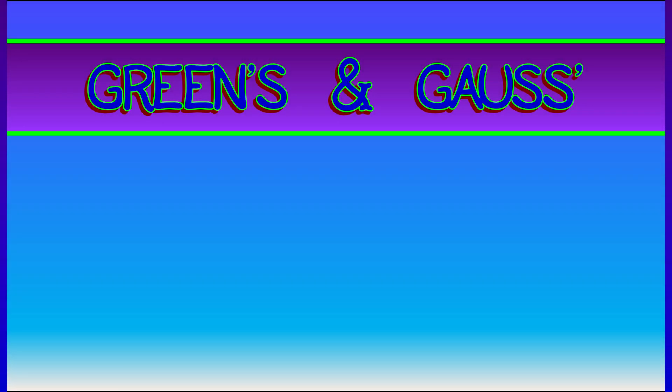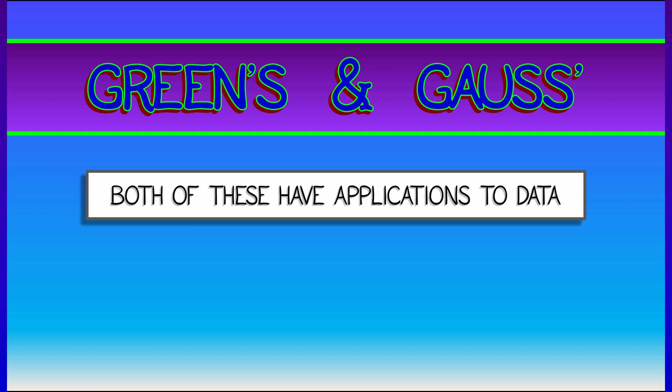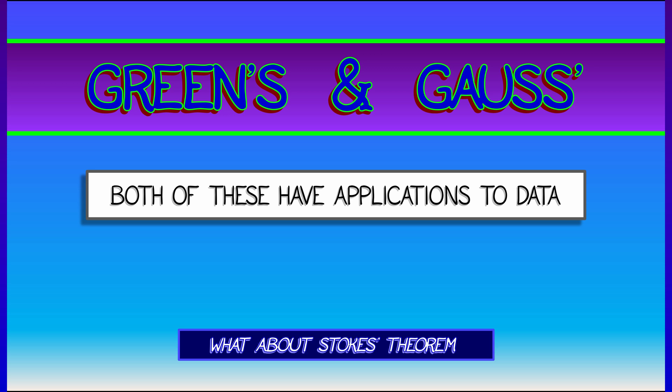We've seen that Green's Theorem and Gauss' Theorem both have applications to estimating geometry from data points in dimension 2 and dimension 3, but something's missing. What about Stokes' Theorem? Can we find a cool application of that to data?